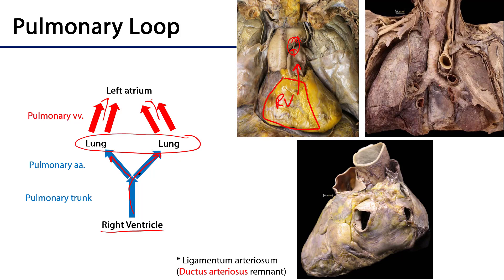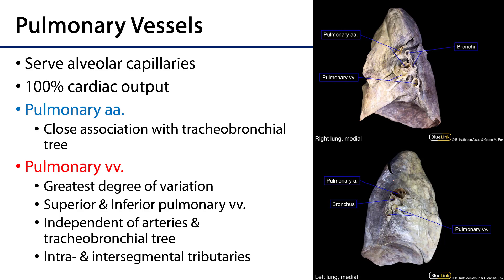We can also see examples of pulmonary arteries and pulmonary veins. These pulmonary veins return that blood to the left atrium, which is deep here to the base of the heart. The key point is that these pulmonary arteries and veins are serving alveolar capillaries. This is 100% of cardiac output — everything that's leaving the right ventricle is going through these capillaries.